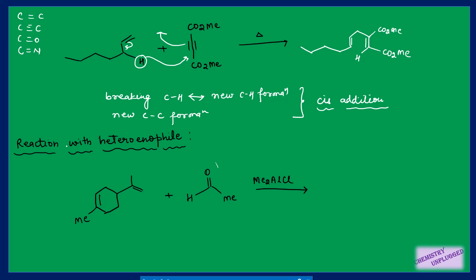Heteroenophile means the enophile contains atoms other than carbon — we can have carbon-double bond-oxygen or carbon-double bond-nitrogen instead of carbon-carbon double or triple bond. These can also act as enophile. We identify which part is the ene (having allylic hydrogen) and which is the enophile. Here we are using a Lewis acid rather than high temperature; the Lewis acid attaches to this oxygen, making it more electron-deficient and the reaction more reactive, so we need only low temperature conditions.